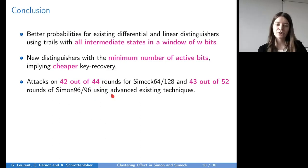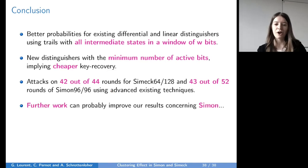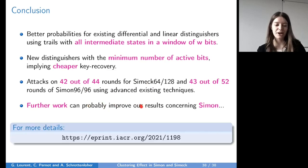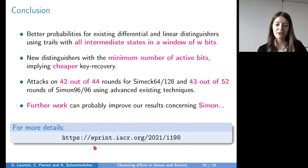To conclude: in this work, we find better probabilities for existing differential and linear distinguishers using trails with all intermediate states in a window of W bits. We also find new distinguishers with the minimum number of active bits, making key recoveries cheaper. We obtain attacks against CIMEC and Simon — in particular, 42 rounds out of 44 for CIMEC 64-128 and 43 rounds out of 52 for Simon 96-96, using advanced techniques such as the Walsh-Hadamard transform approach. However, our lower bound for Simon's linear approximations is likely not as tight as for CIMEC due to larger rotation amounts, so further work can improve these results. Thanks for listening, and for more details you can read our paper.